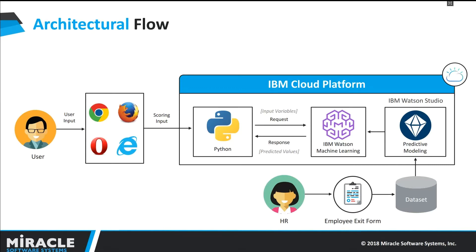Let us discuss the complete architecture flow involved with the application development. HR fills out the employee exit form whenever the employee leaves an organization, and this form data is stored in the database as historical data which is used as input to build a predictive model. For building the model, we have used IBM Cloud Watson Studio where we created a project and a Modeler Flow — that is an IBM SPSS Modeler Stream — and built a Naive Bayes classification model on this dataset. Once the model building is done, we deployed the model into IBM Watson Machine Learning Service. For every model we develop, we get a scoring endpoint using which we can hit the model to score the input.